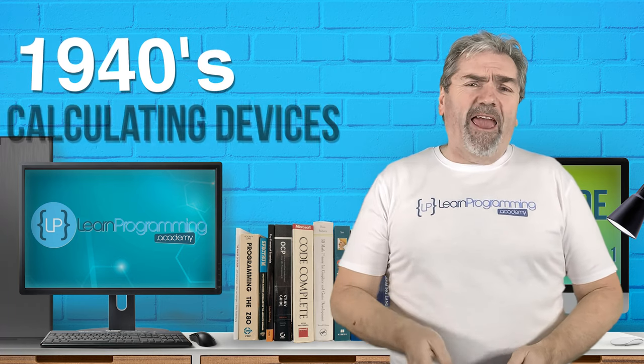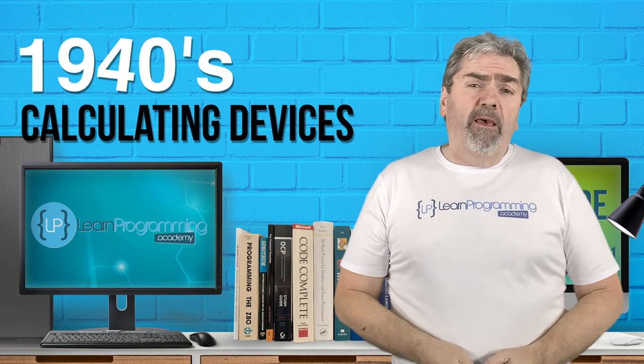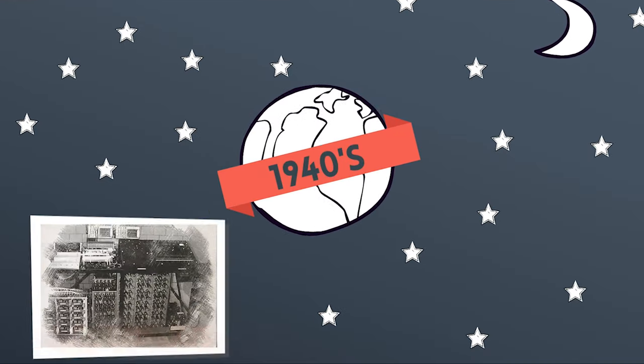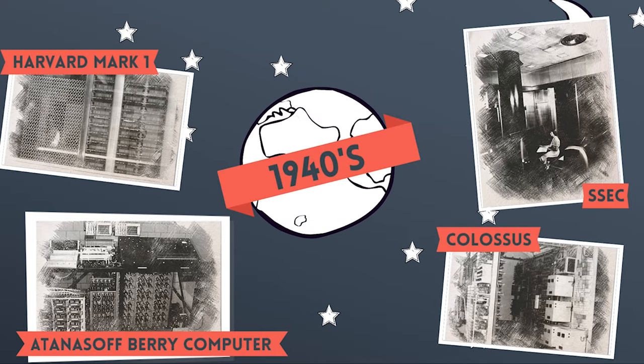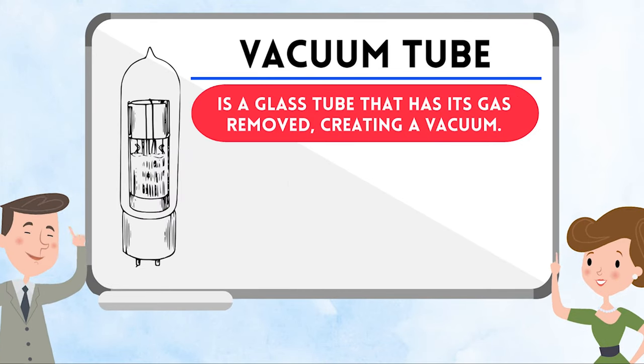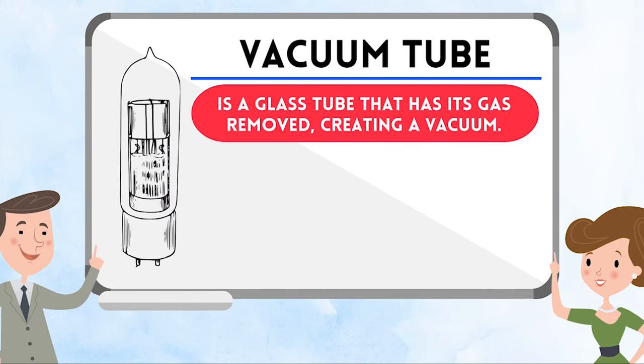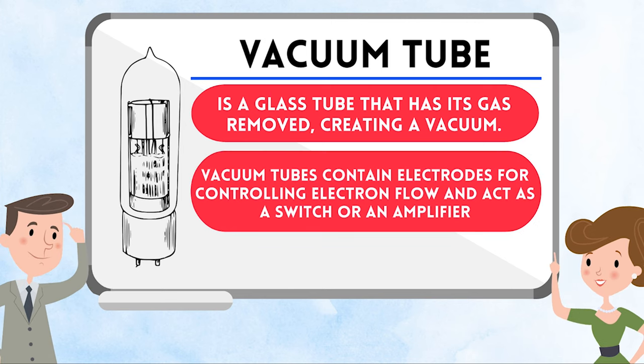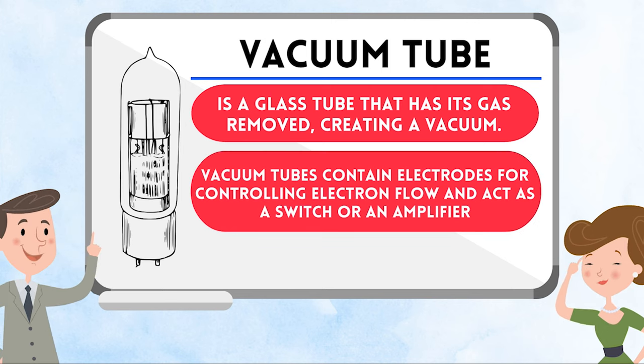The 1940s touched off many advances in the computer. However, they were still referred to as calculating devices during this era, because the definition of a computer was still attributed to humans doing massive calculations during this decade. Several calculating devices emerged making use of vacuum tube technology. The vacuum tube is a glass tube that has its gas removed, creating a vacuum. Vacuum tubes contain electrodes for controlling electron flow and act as a switch or an amplifier.